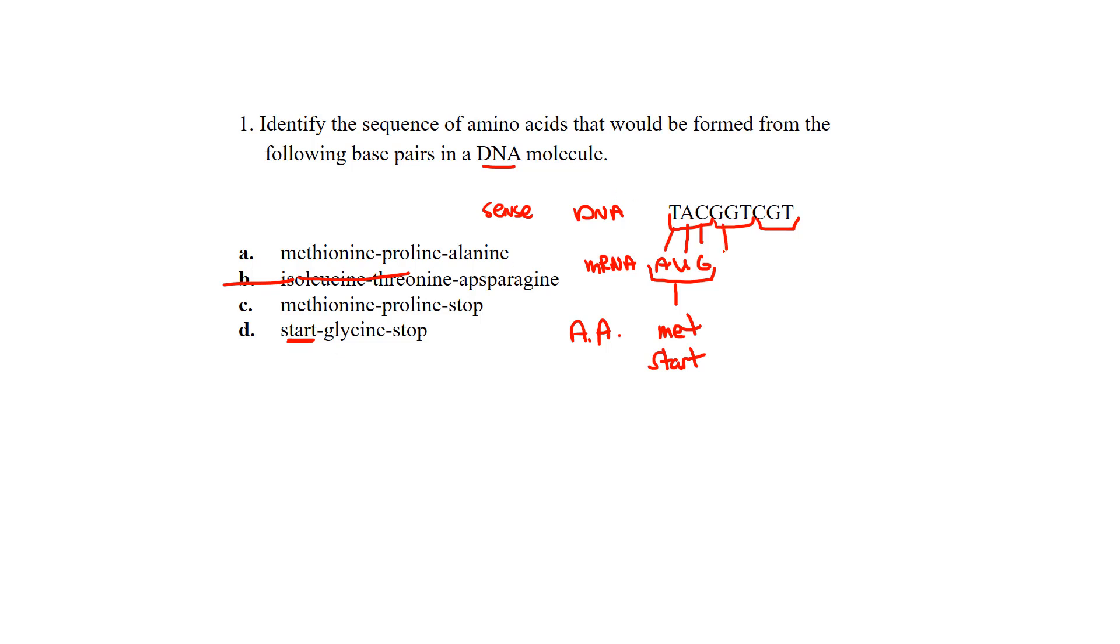Let's go to the next one. G always binds with C, G always binds with C, T always binds with A. So we have CCA. When we go take a look at our library, we see that that is going to code for proline. Okay. Once we see proline, now we can get rid of D because that was a different amino acid. And now we're left with A and C.